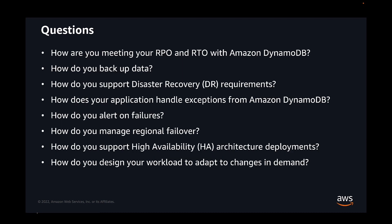We have now reached the end of this segment of the Well-Architected Lens for DynamoDB. Here are some questions you should think about when architecting reliably: How are you meeting your RPO and RTO requirements with DynamoDB? How do you back up your data? How do you support disaster recovery requirements? How does your application handle exceptions from DynamoDB? How do you alert on failures? How do you manage regional failovers? How do you support high availability architecture deployments? Thank you for sticking with me throughout the video — please check out our documentation linked below.